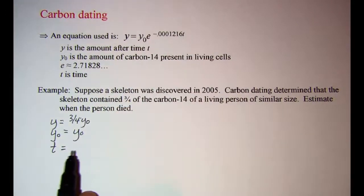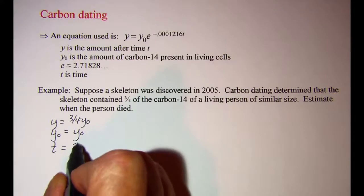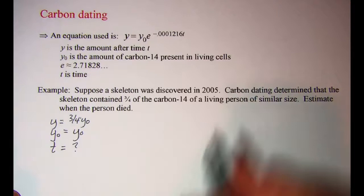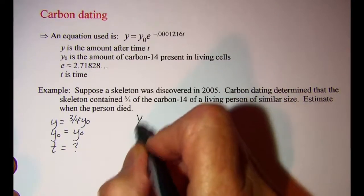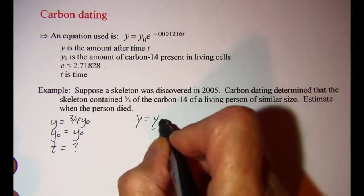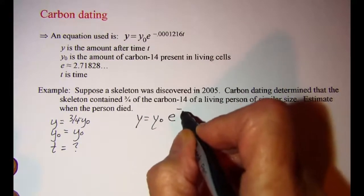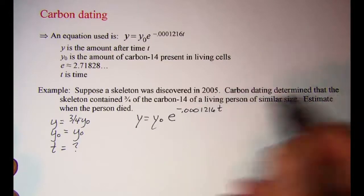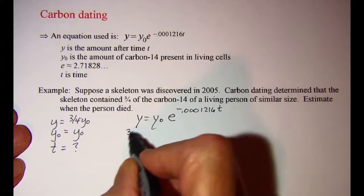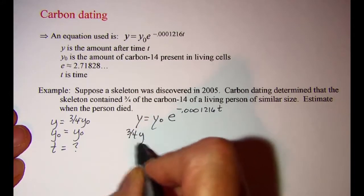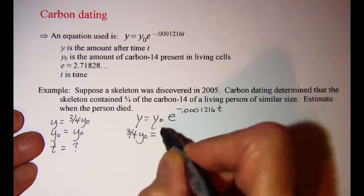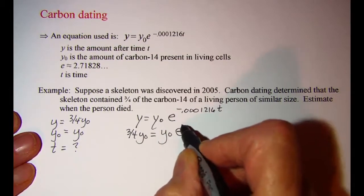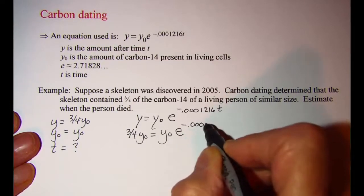And then we are going to be looking for how long ago the person died. So our formula is y equals y sub zero e to the negative 0.0001216 times t. Our y is three-fourths y sub zero, and our y sub zero we are leaving that as y sub zero.